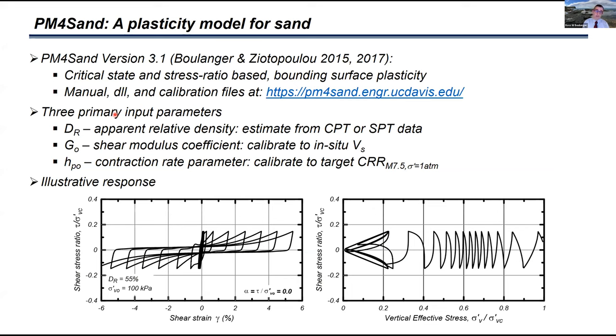A couple of things on the constitutive models. For the sand units we're using PM4SAND. This is a critical state stress ratio based bounding surface plasticity model put together by myself and Katarina Ziotopoulou. The manual, the dynamic link library and calibration files are available at our website. This model has three primary input parameters: a relative density that you estimate from your in-situ test data, a shear modulus coefficient that you can use to calibrate to in-situ shear wave velocities, and then a contraction rate parameter that you use to calibrate the model to give you the target cyclic resistance ratio for the magnitude seven and a half and one atmosphere overburden stress, using whatever triggering correlation you prefer to use. The bottom figure is just an illustrative response of the model to show it generates that cyclic mobility and accumulation strains after triggering liquefaction.